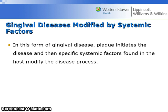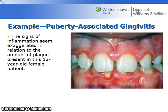In gingival diseases modified by systemic factors, plaque initiates the disease, and then specific systemic factors found in the host modify the disease process. An example is puberty-associated gingivitis, where signs of inflammation appear exaggerated in relation to the amount of plaque present in a 12-year-old female patient.